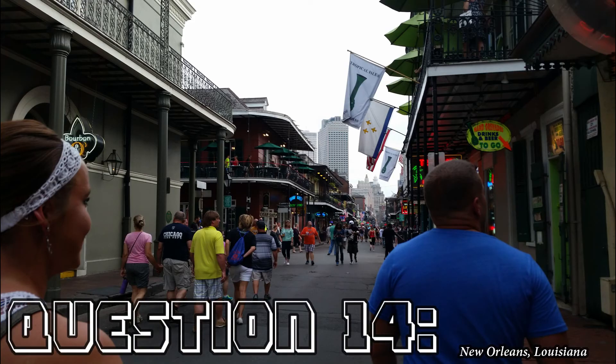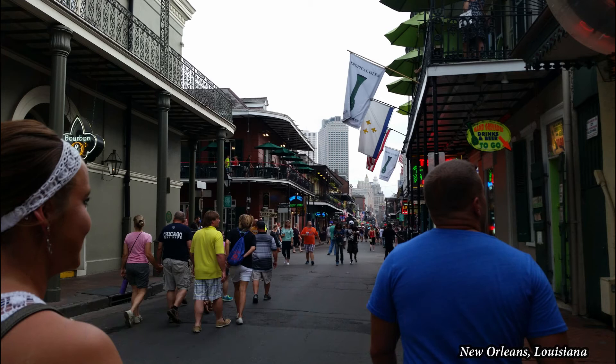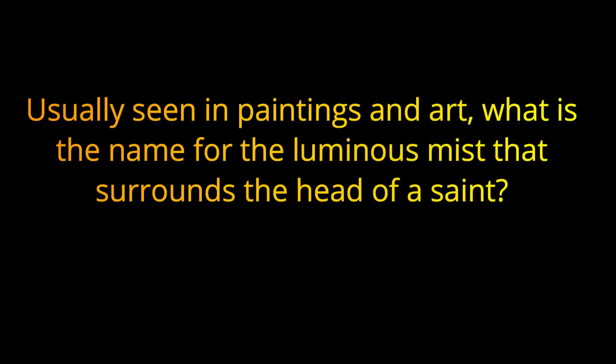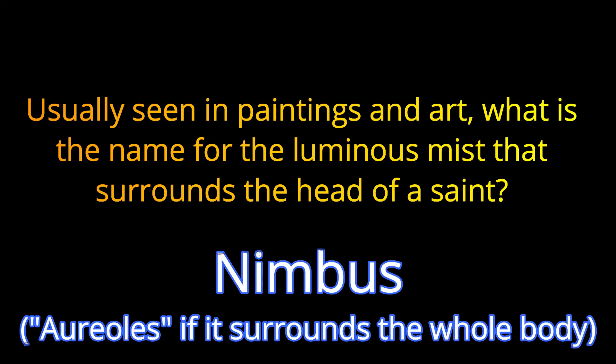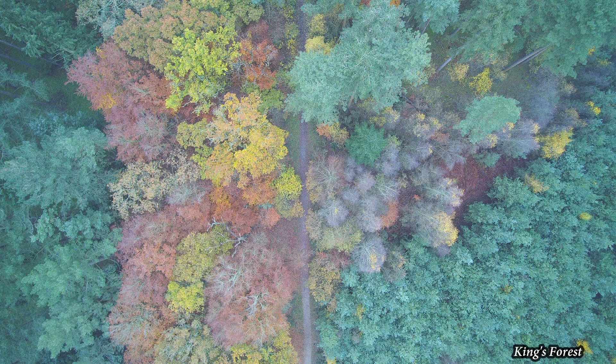Question 14. Usually seen in paintings and art, what is the name for the luminous mist that surrounds the head of a saint? The answer is Nimbus. Halo also works, but the answer is Nimbus.